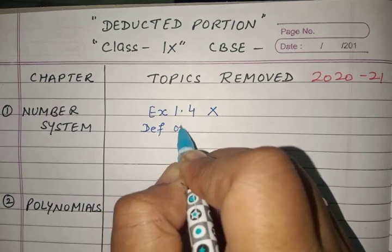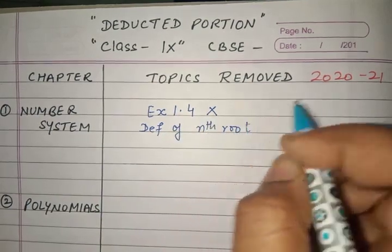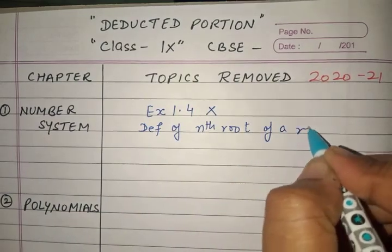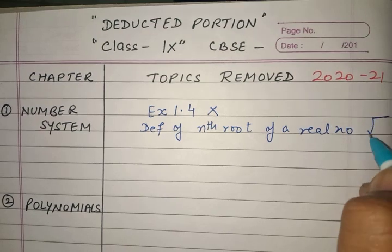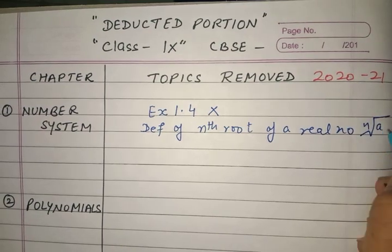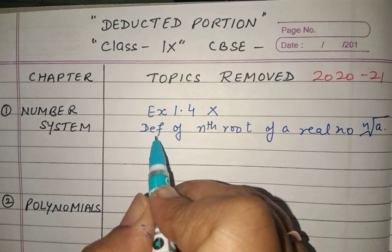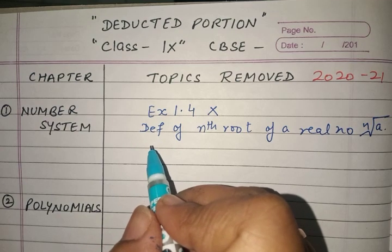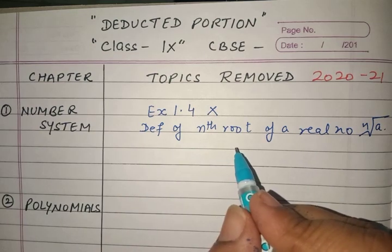The second thing that they have removed is the definition of nth root of a real number. This definition is removed — no need to learn the definition.